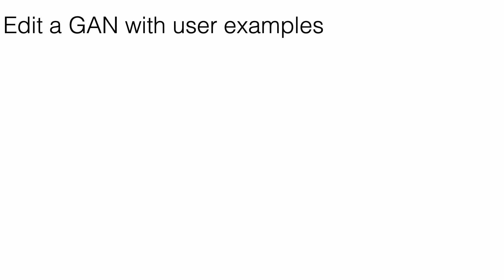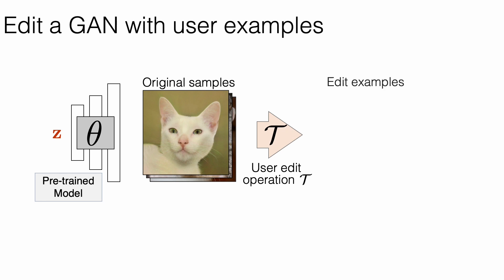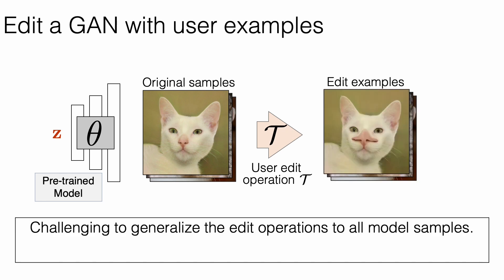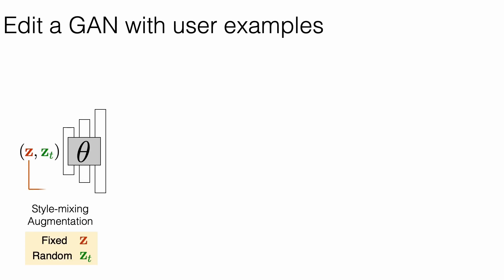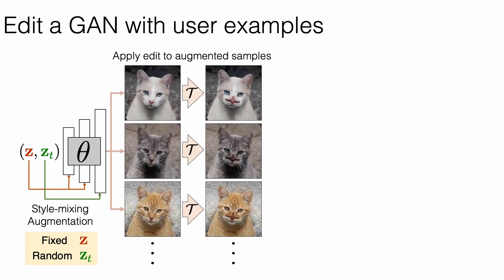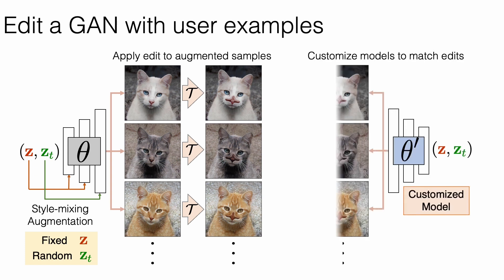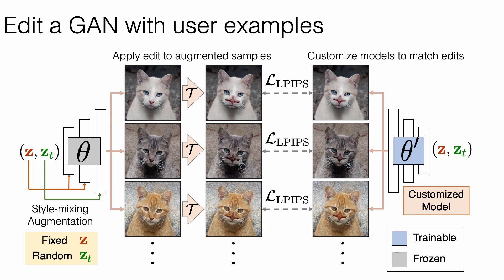Here is how our method works. The user is asked to edit a handful of reference images sampled from the pre-trained generative model. The key challenge is to learn how to generalize a small number of warping examples to change an entire model. We address this using a data augmentation scheme — the idea is to use the generator itself to generate infinite variations of images modified by the user's warp. For every latent code in the user's examples, we fix the latent code that controls shapes and poses, and randomly sample the latent code for colors and textures. As a result, we can generate infinite variations of samples to apply the same user edit. We then train a customized model on these images using the commonly used perceptual loss LPIPs.